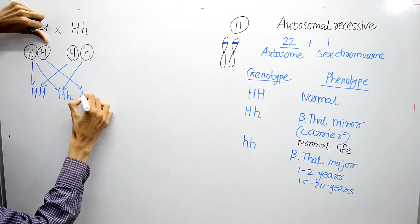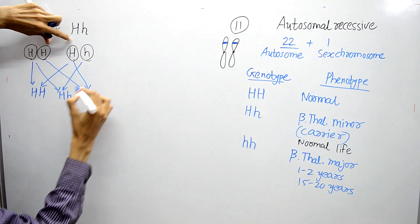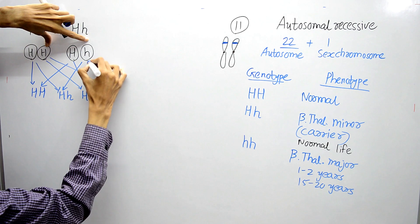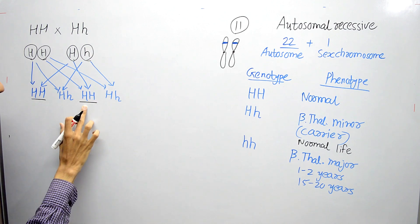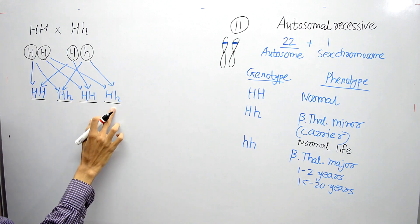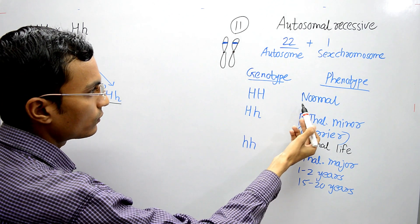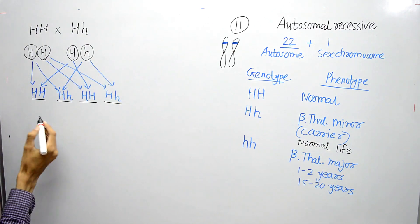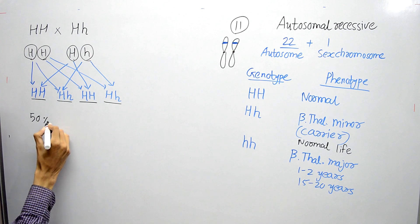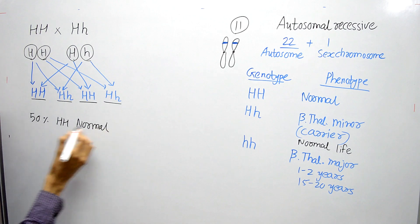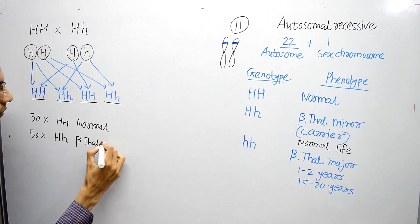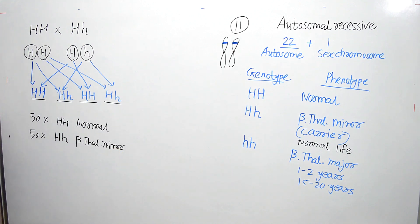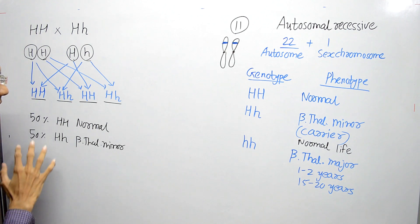Crossing the gametes gives four offspring: capital H capital H, capital H small h, capital H capital H, and capital H small h. Two offspring are capital H capital H (normal phenotype) and two are capital H small h (beta thalassemia minor phenotype). So 50% of offspring are normal and 50% are beta thalassemia minor. Since minor individuals can live a normal life, all these offspring are asymptomatic.